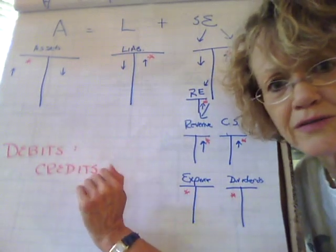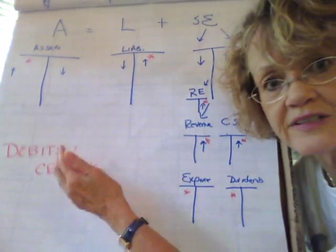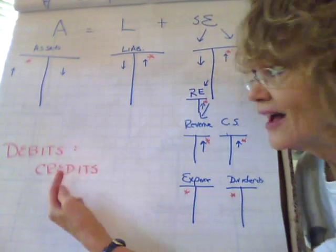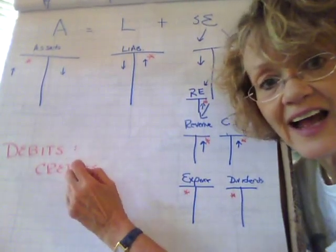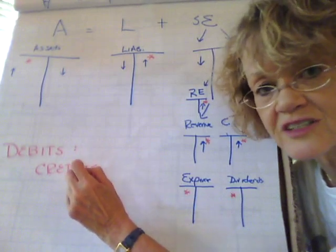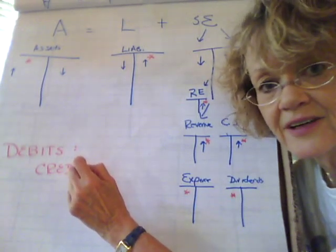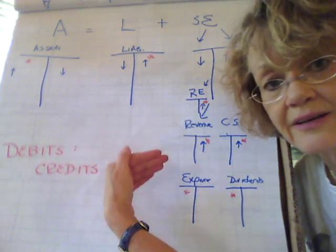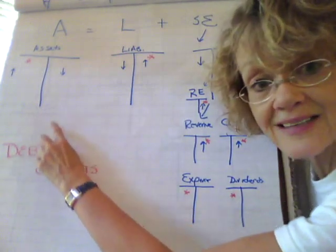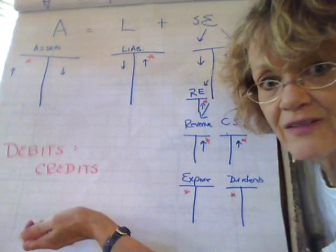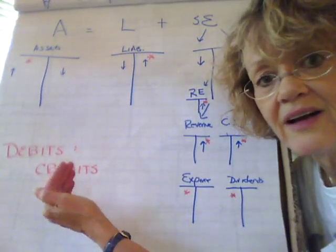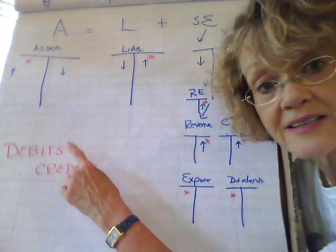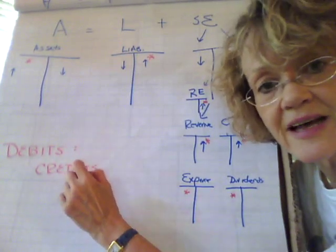So if assets are on the left side, then they're gonna have debit. Debit is just a synonym for left. Left, debit. Credit is right. So all the assets like cash, our favorite one, accounts receivable, equipment, have debit balances.